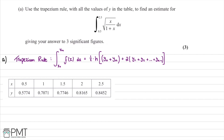We first recall the trapezium rule. For the general case where we're integrating f(x) with respect to x from x₀ to xₙ, the formula is: (1/2) × h × [y₀ + yₙ + 2(sum of remaining y values)], where h is the step size we'll explain shortly.